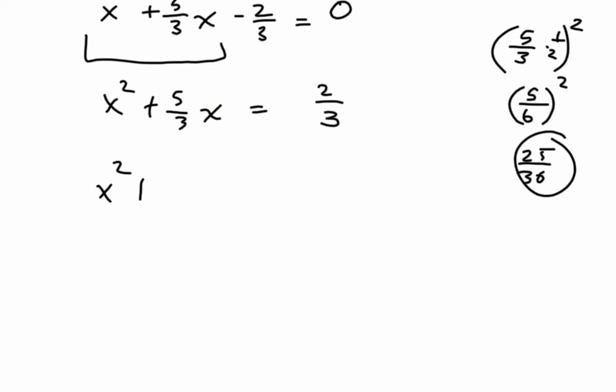So I have x squared plus 5 thirds x plus 25 over 36. That makes this a perfect square, is equal to 2 thirds. But since I added this on this side, I can add it on this side, and not change the equality.